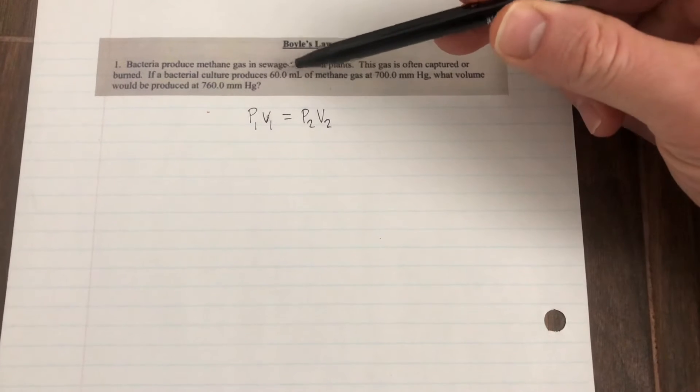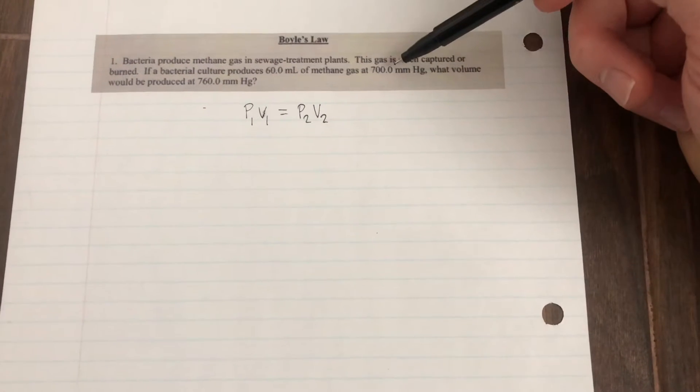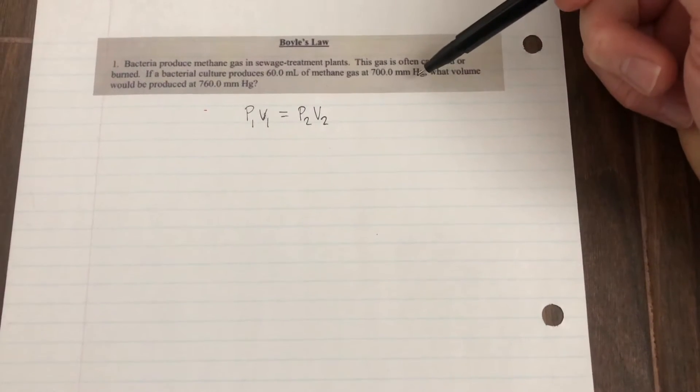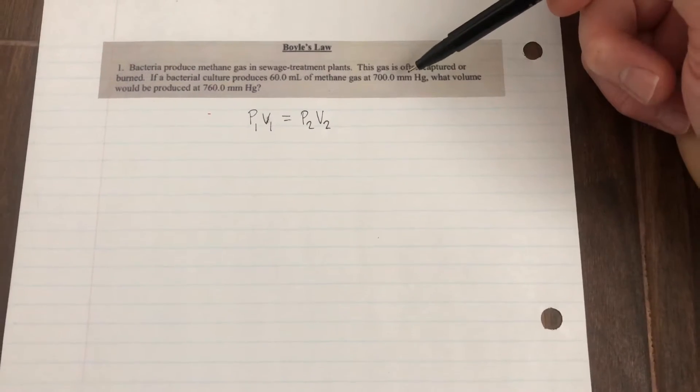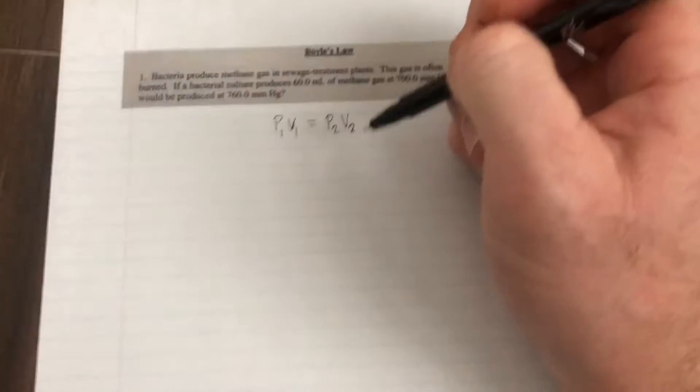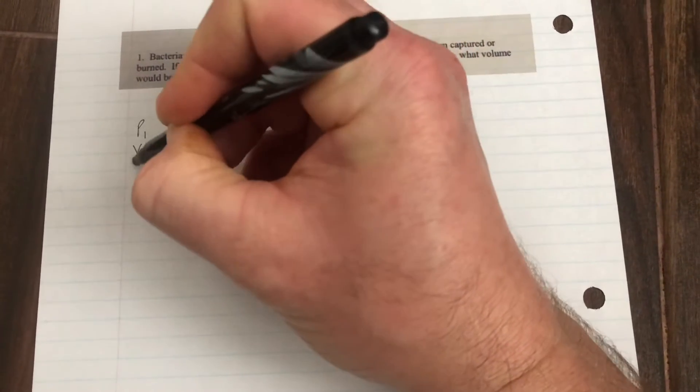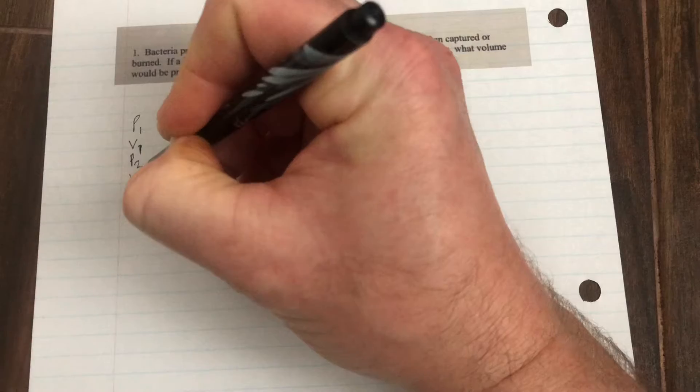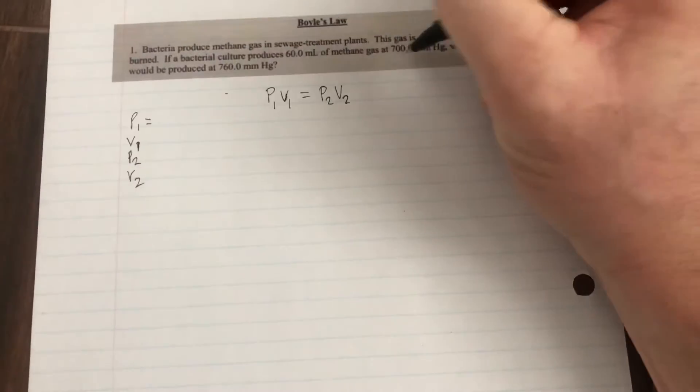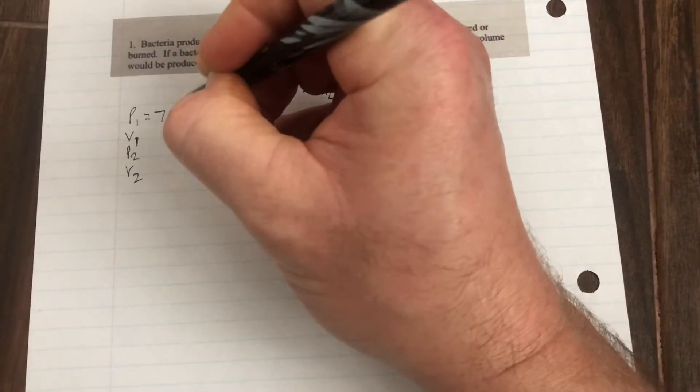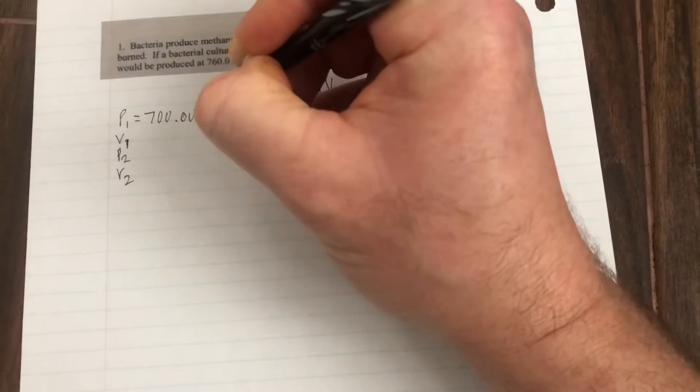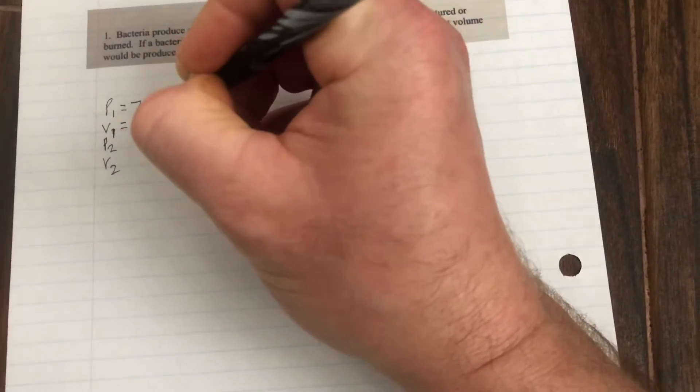In this question, it mentions that bacteria produce methane gas and the gas is often captured. If the bacteria produces 60 mils of gas at 700 millimeters of mercury, what volume would that gas occupy at 760 millimeters of mercury? So I often list my variables off on the side and I organize what I have.